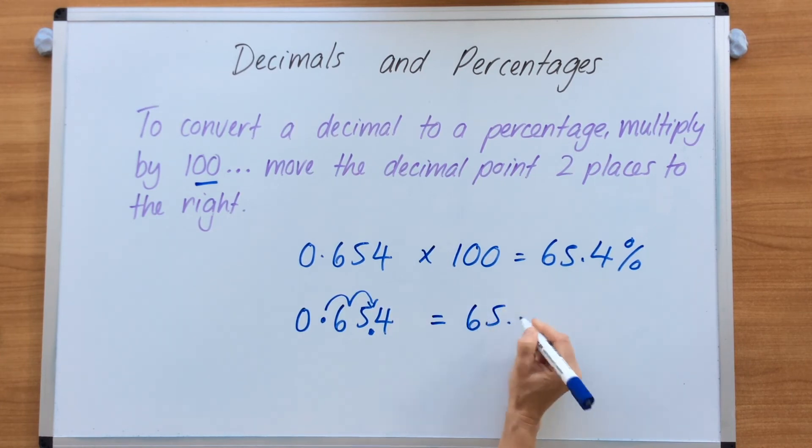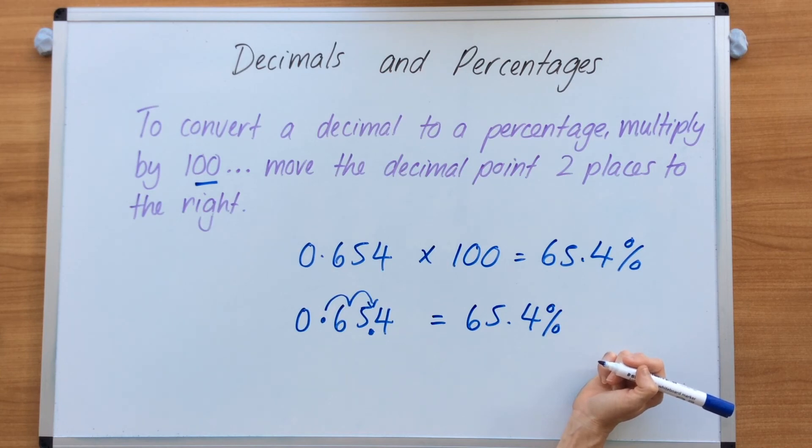Equals 65.4. And because we're going to percentage, we put the percentage symbol in. So if you're converting decimals to percentage, we multiply by 100. We jump two decimal places to the right.